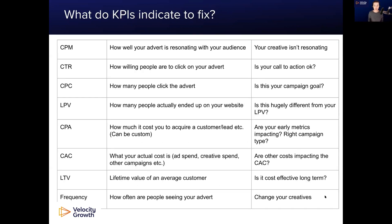Here's what these metrics indicate to fix. If your CPM is high, your creative isn't resonating with your audience and you need to change it. If your CPM is good but your click-through rate is poor, look at your call to action — is it clear? Make sure you only have one call to action per advert. Don't put multiple goals into each advert.